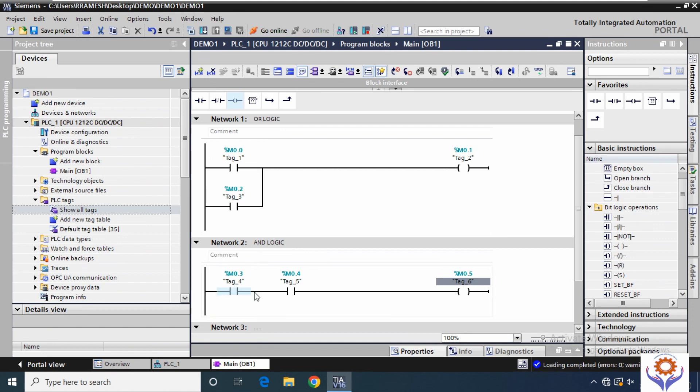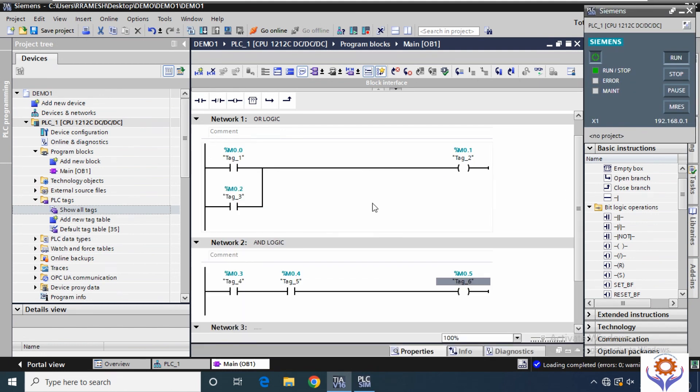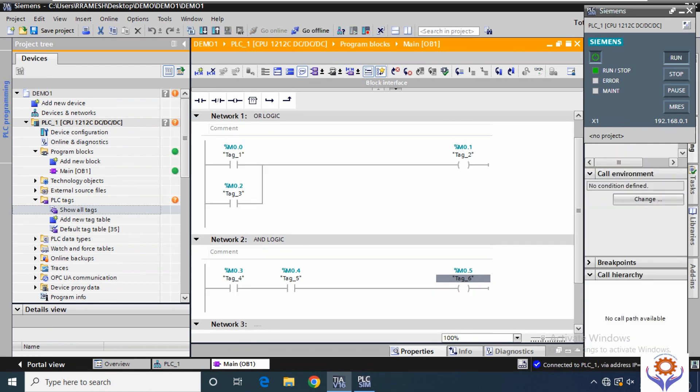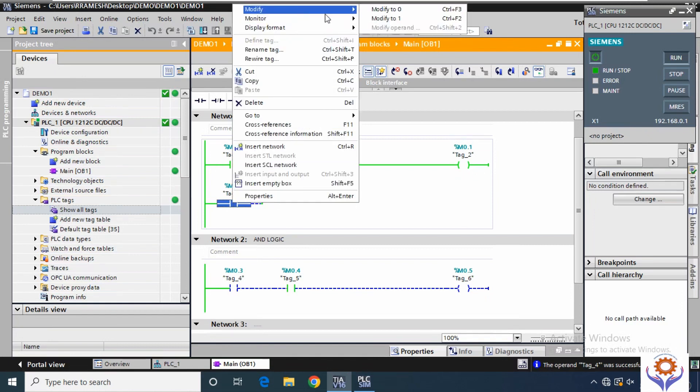Let us start the simulation. Now we are in online mode. If you observe the left rung as green color, this means the power lines moved up to the normally open contact. Just simulate the input %M0.0 to 1. Then the output becomes 1.